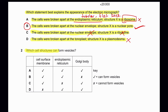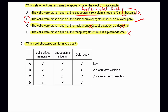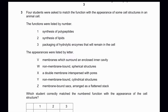Question 2: Which cell structures can form vesicles? We know that vesicles can be formed by the cell surface membrane, definitely by the endoplasmic reticulum, and by the Golgi body as well. Option A indicates that all of these cell structures can form vesicles, so A is the correct answer.